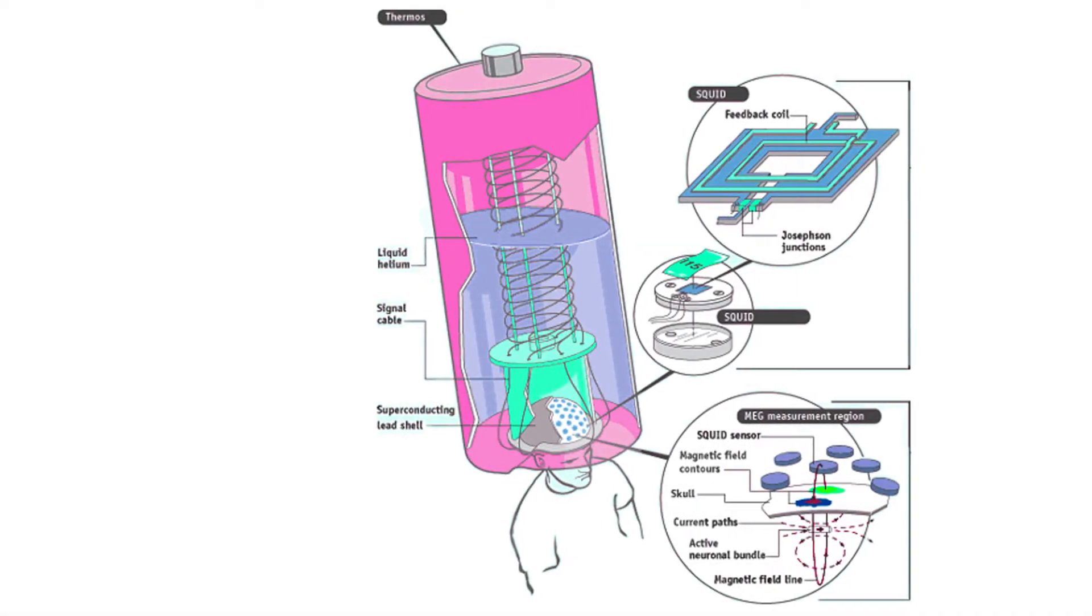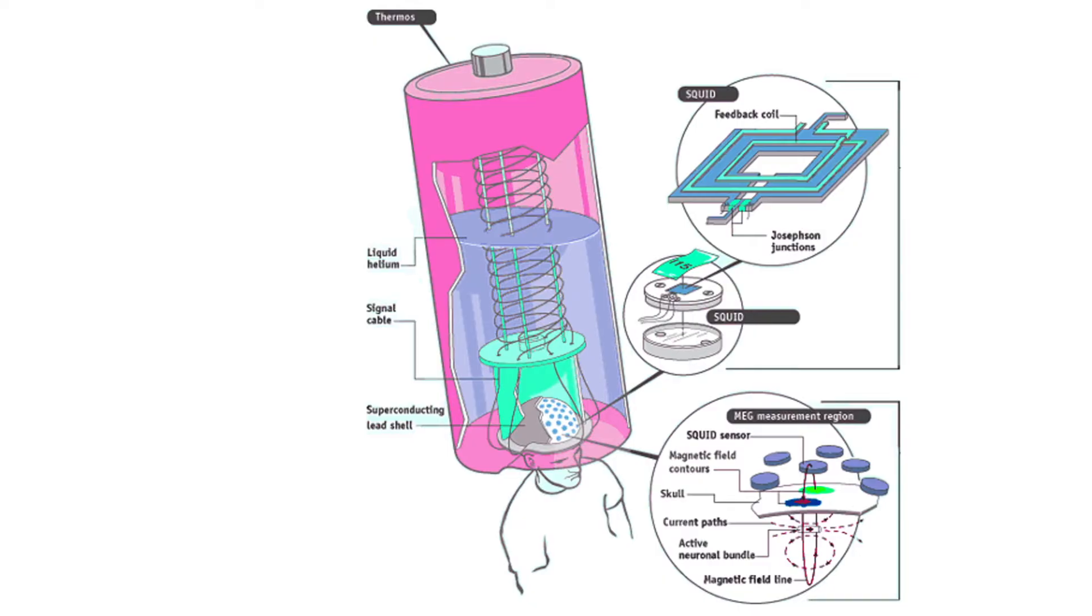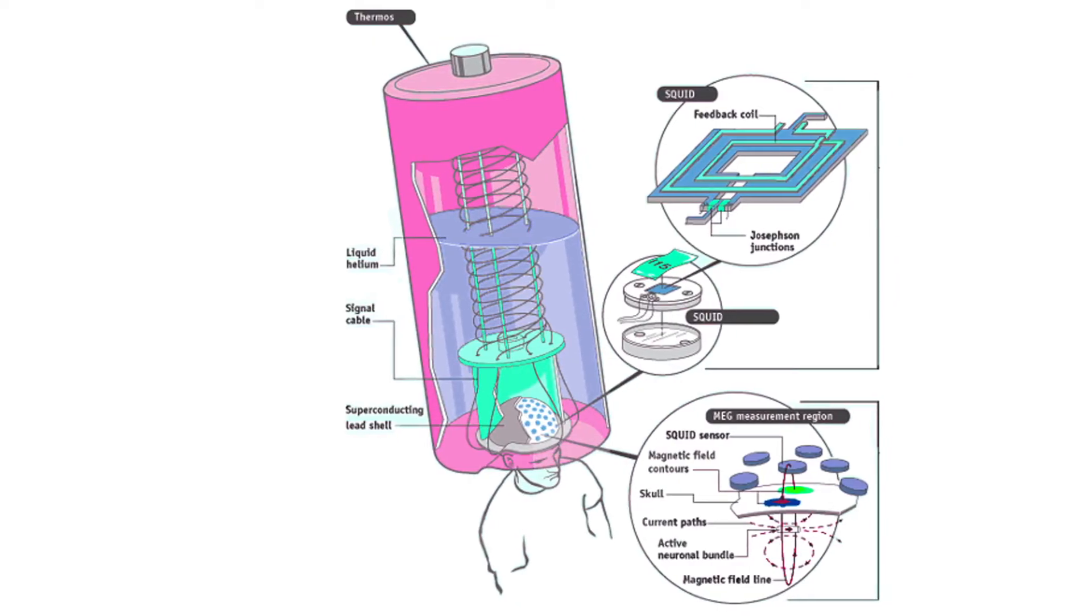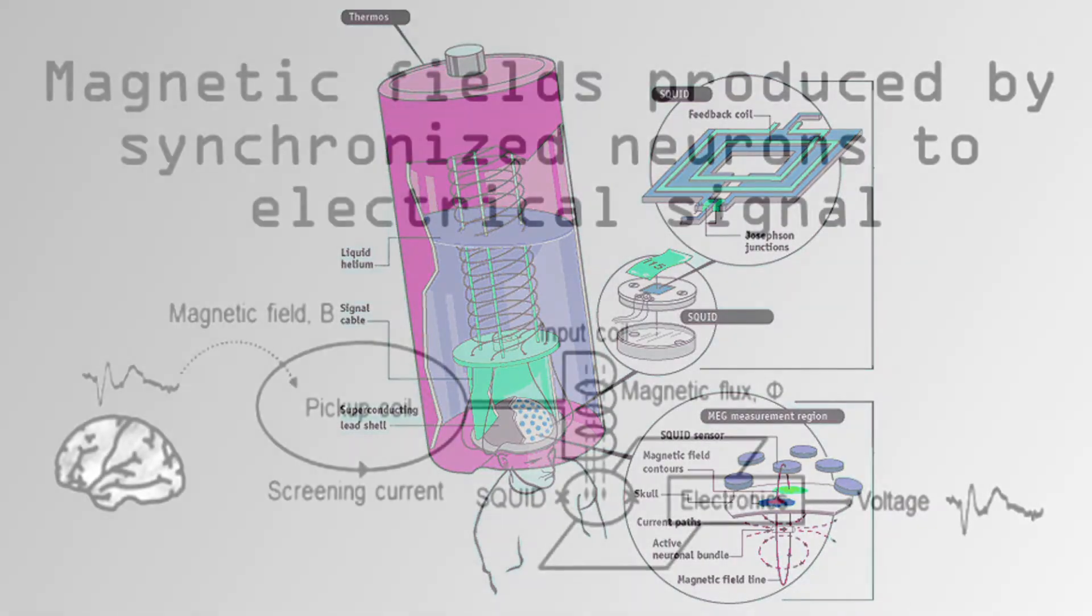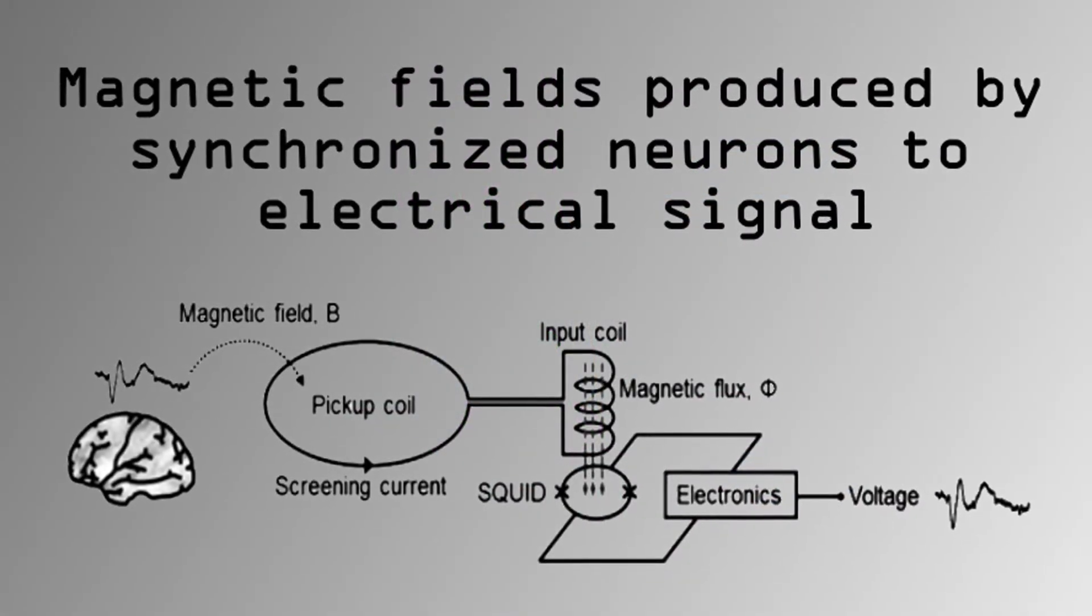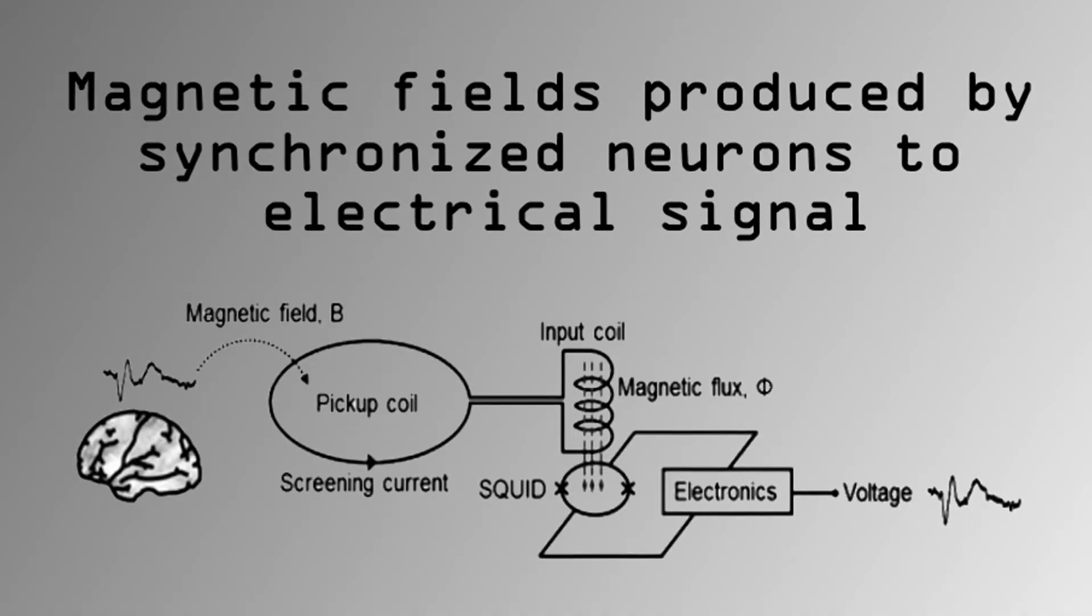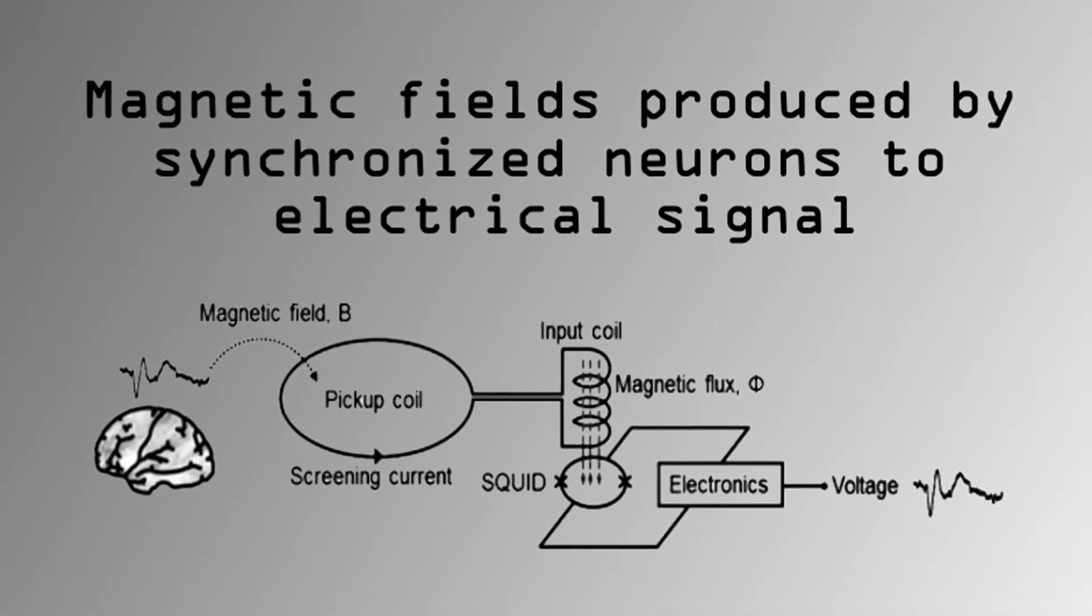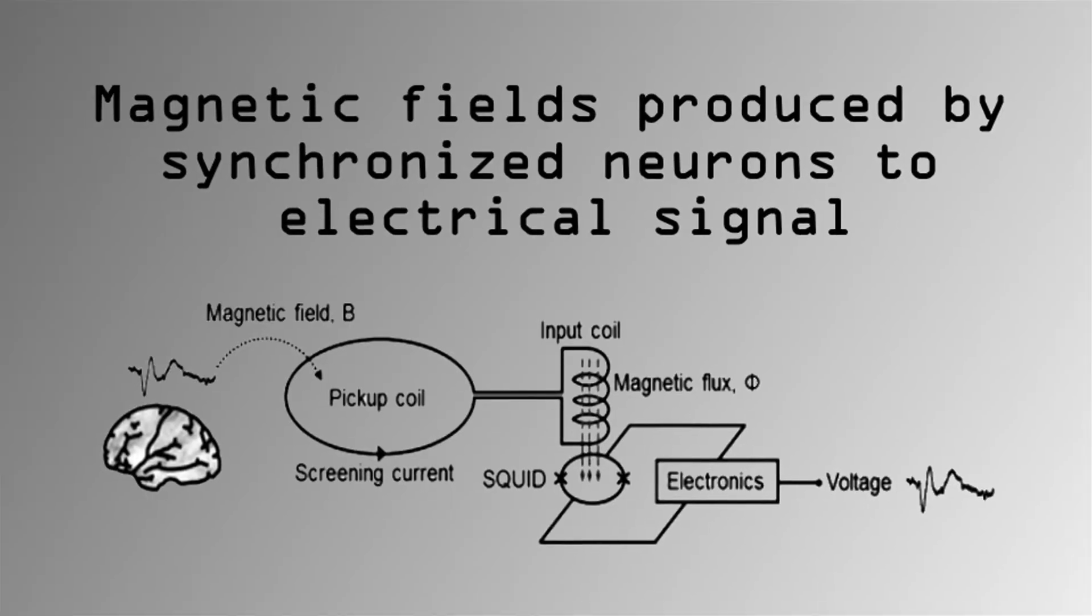This is crucial since the magnetic fields induced by synchronized neuronal firing are much smaller than general magnetic noise in the environment. At these squid sensors, an electrical signal is induced by the magnetic fields, again through the principles of induction, but this time in the opposite way, from a magnetic field to an electrical signal.